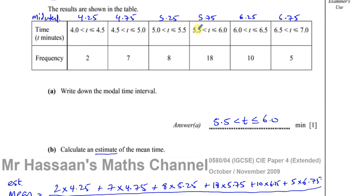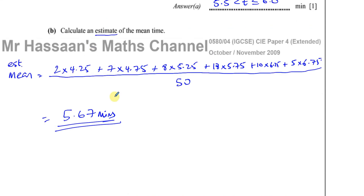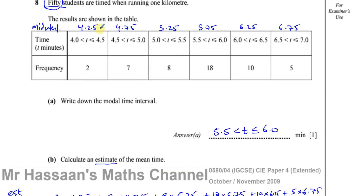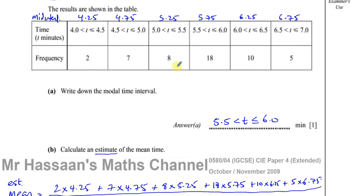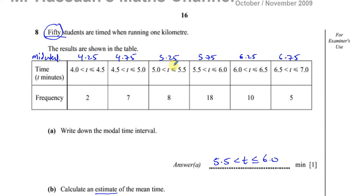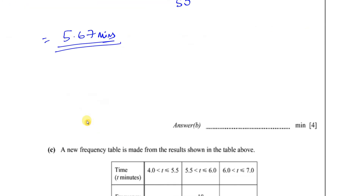Does it make sense? Yes — it's somewhere between 4 and 7. If you get a number outside the range of these values, you've done something wrong, because the mean must be somewhere between these values, between 4 and 7. If you get something like 1-point-something or 10-point-something, you know you've made an error. So that's the estimate of the mean.